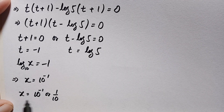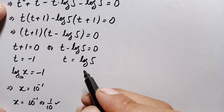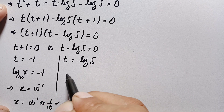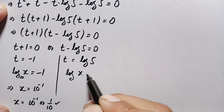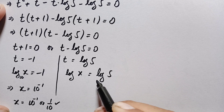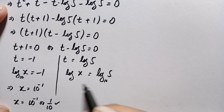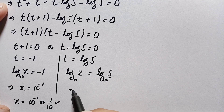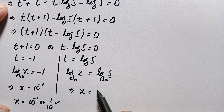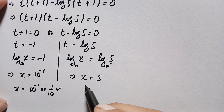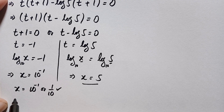For the second equation, replacing t with log x gives log x = log 5. Since both sides have base 10, comparing gives x = 5. So we have two possible values: x = 5 and x = 1/10.